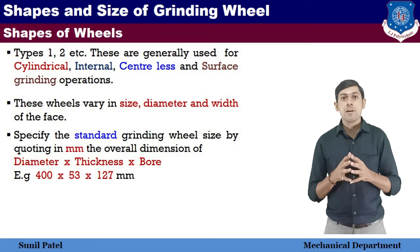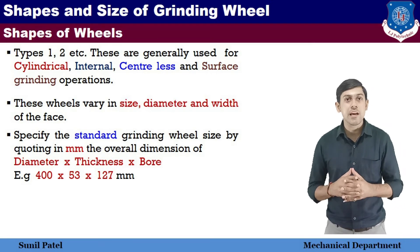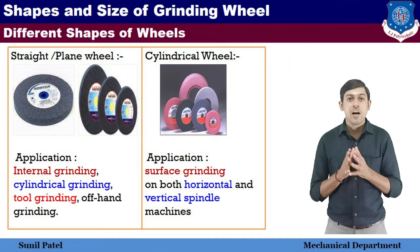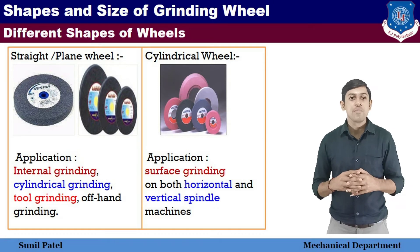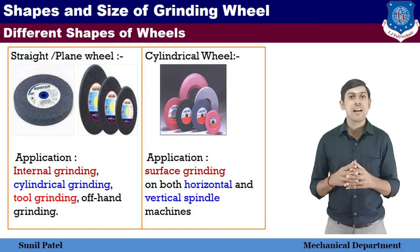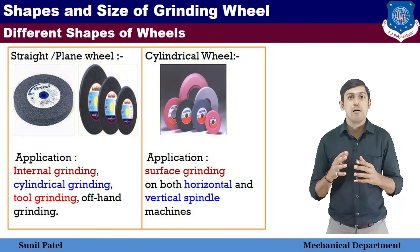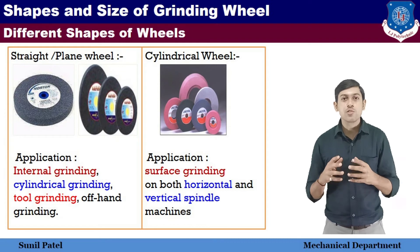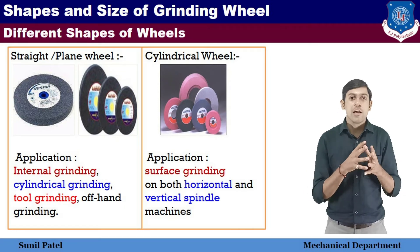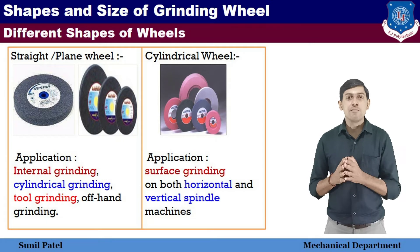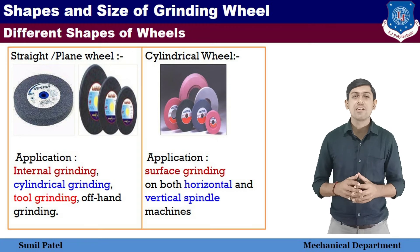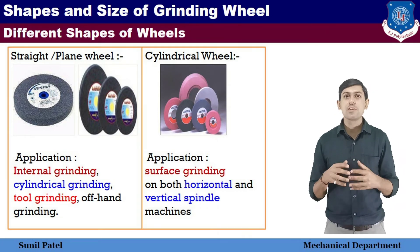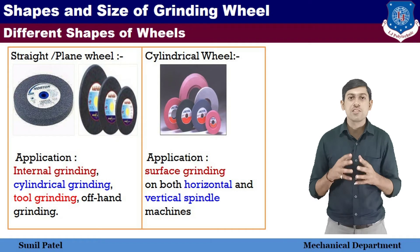Next we will see the applications of different wheel types. The plain and straight wheel is used for internal grinding, cylindrical grinding, offhand grinding, and tool grinding, such as on a bench grinder. The cylindrical wheel's application is the surface grinding operation, used on surface grinding machines with horizontal spindle and vertical spindle type machines.